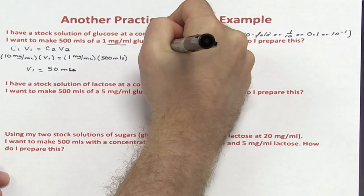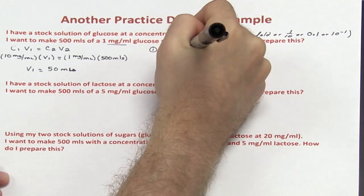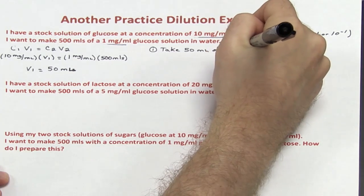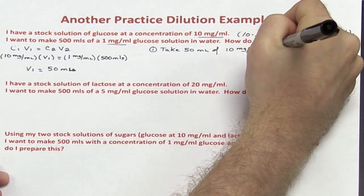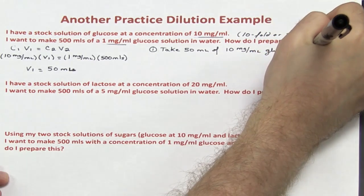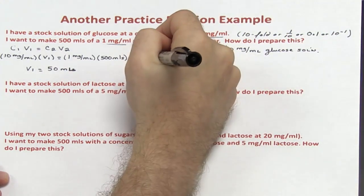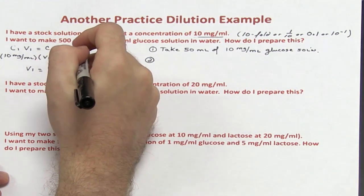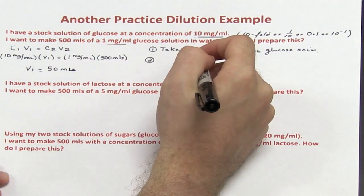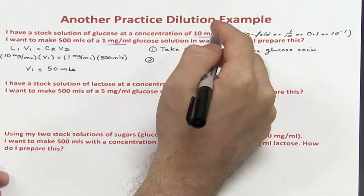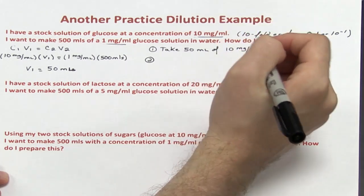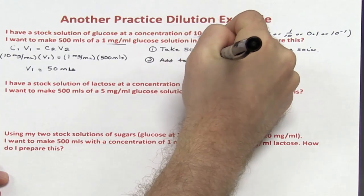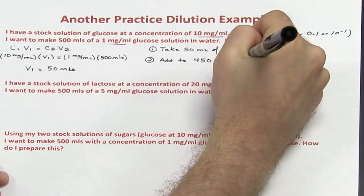How do I prepare this? Step 1: take 50 mL of the 10 mg per mL glucose solution. To figure out how much diluent I need, I take the final volume of 500 mL and subtract the stock volume of 50 mL, giving me 450 mL. So I will add this to 450 mL of water.